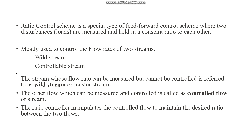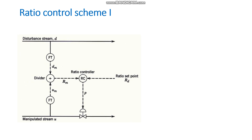We maintain the ratio of these two flows. The ratio controller manipulates the control flow to maintain the desired ratio between the two flows. In this ratio control scheme, there is a disturbance stream and a manipulated stream, and we maintain the ratio using the ratio controller.